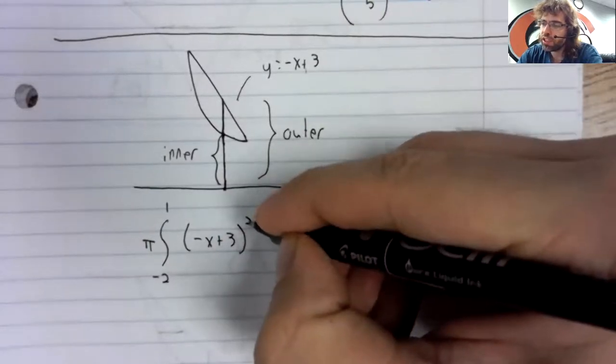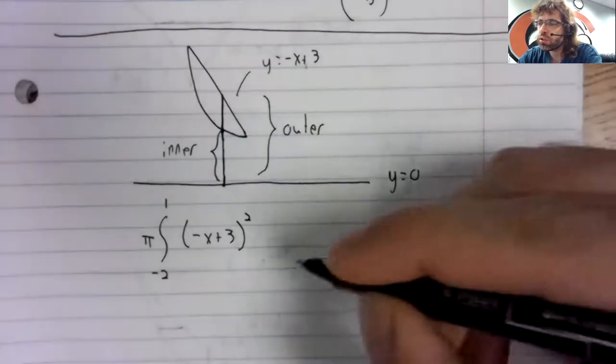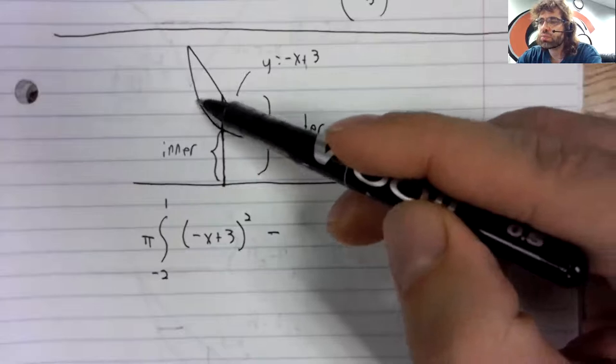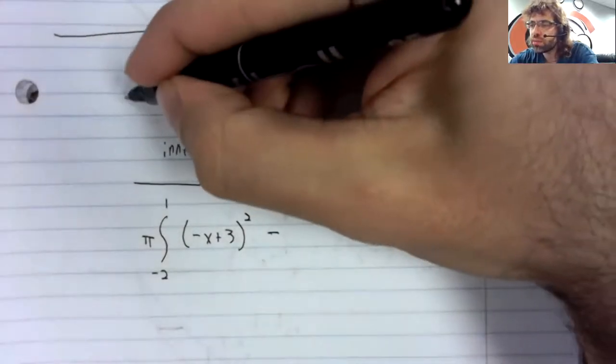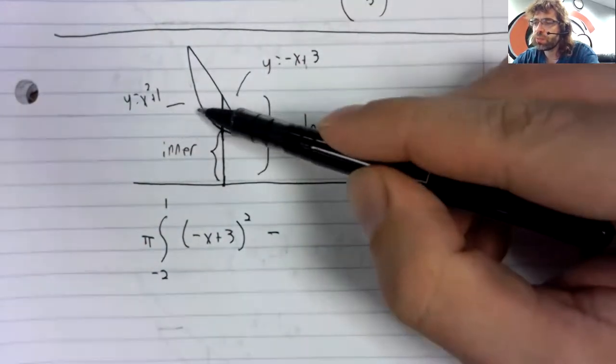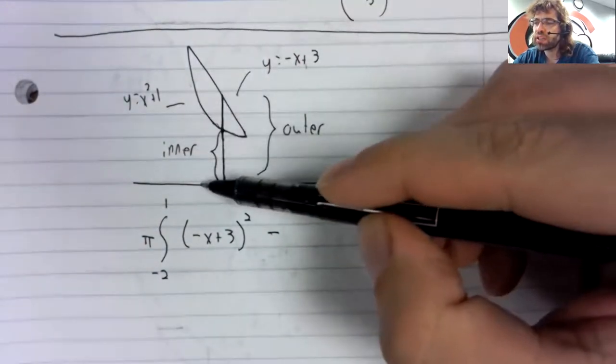Outer radius squared minus. This is x squared plus one. So x squared plus one minus zero.